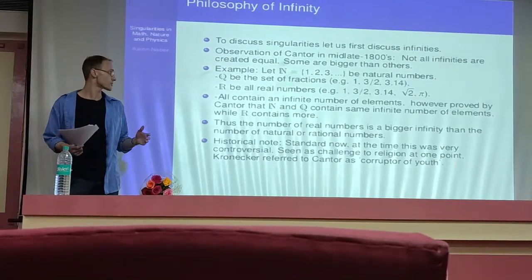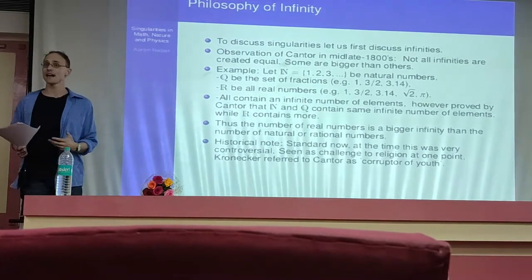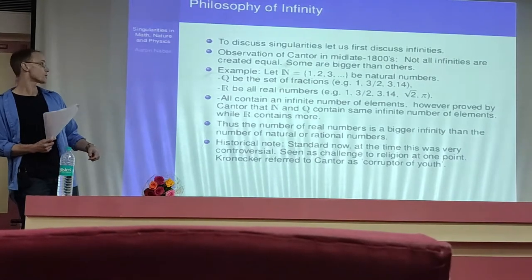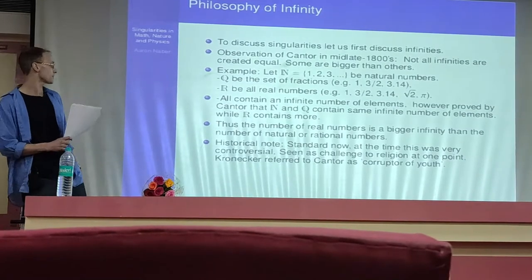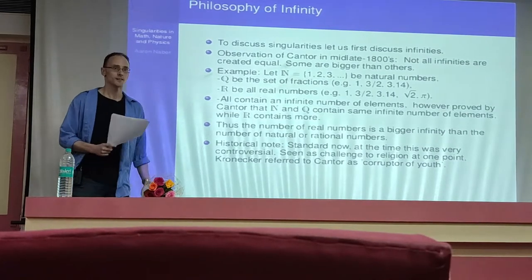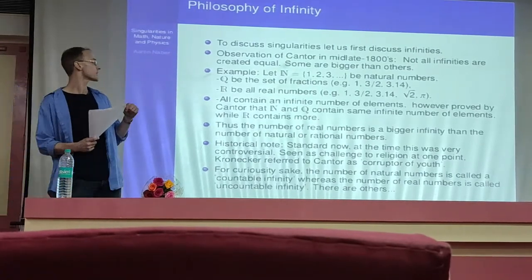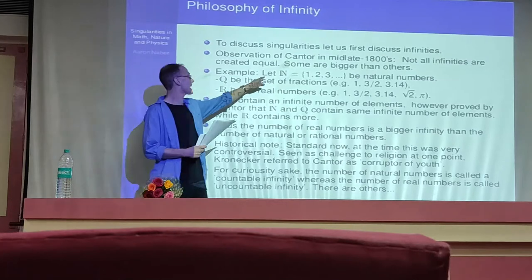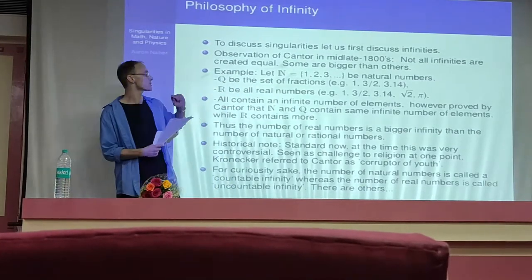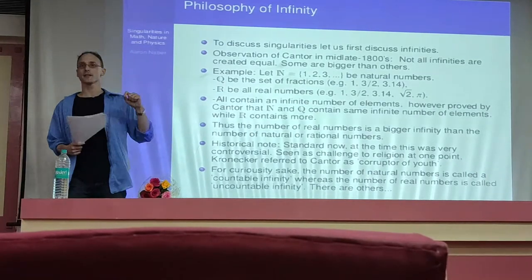In other words, the real numbers is a bigger infinity than the number of natural or rational numbers. My historical note is what I mentioned before. The guy who referred to him as the corrupter of youth is Kronecker. For my mathematicians in the audience, you'll recognize this name. For those of us who are curious, the type of infinity that the natural numbers is, is called a countable infinity. The type of infinity that the real numbers are is called an uncountable infinity. And there are others that are out there, in case you wanted math to get more painful.